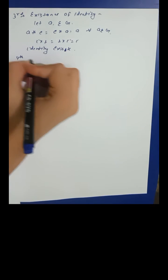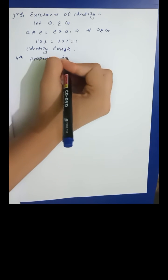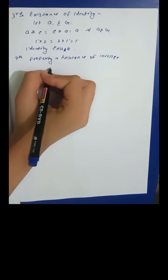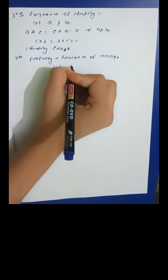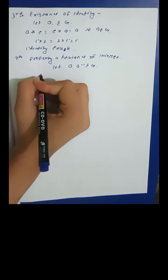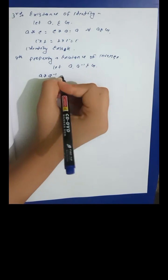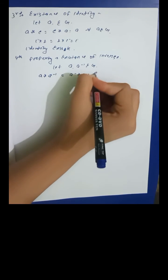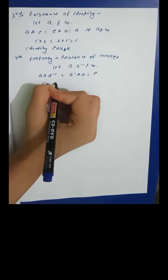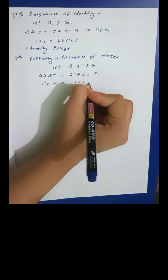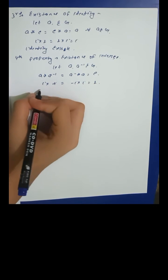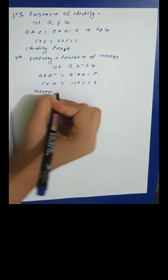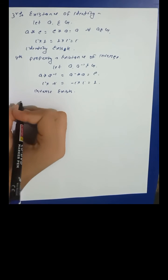The fourth property is existence of inverse: for each a in G, there exists a⁻¹ in G such that a★a⁻¹ = a⁻¹★a = e. For example, iota×(-iota) = (-iota)×iota = 1. So the inverse exists.